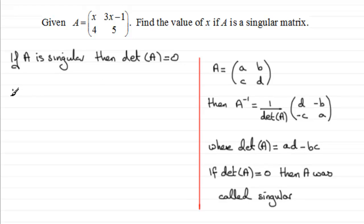And so therefore that would mean the product of the leading diagonal, 5 times x, 5x, minus the product of the trailing diagonal, 4 times 3x minus 1, should equal 0.